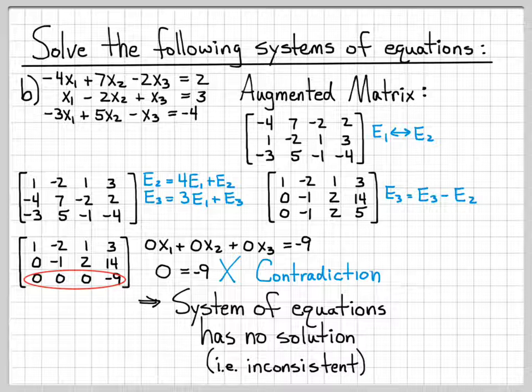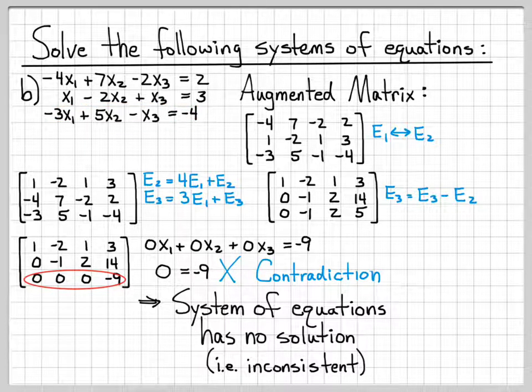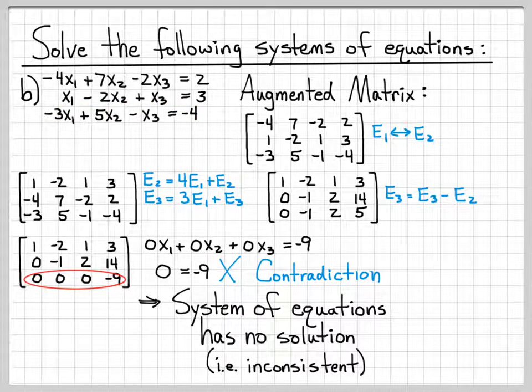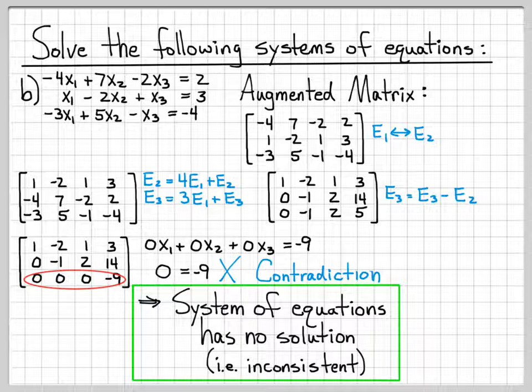We changed that third equation just ever so slightly. And that change has resulted in a system of equations that has a contradiction in it, which means that the system does not have a solution. So sometimes this is the answer. Somebody says solve the system of equations. Sometimes you say there is no solution. The system of equations is inconsistent.